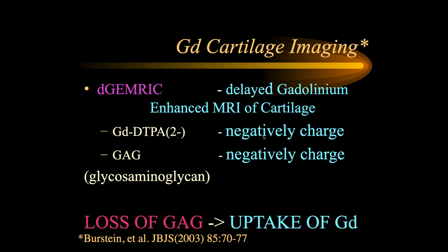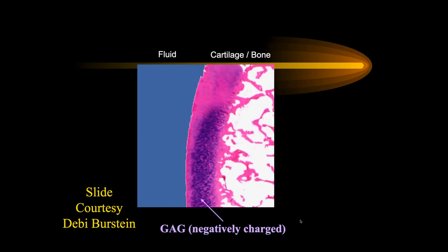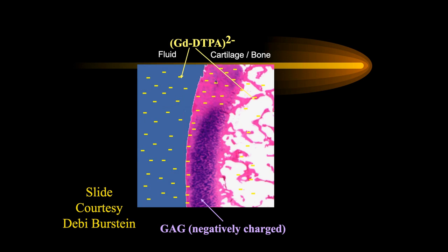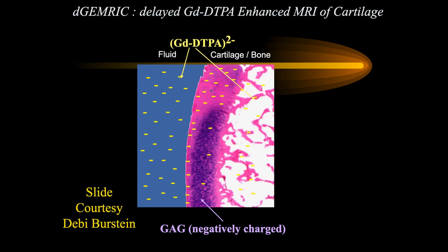If you have loss of glucosaminoglycan, you get uptake of gadolinium. Histologically, glucosaminoglycans stain purple with androxane-eosin stain; loss of glucosaminoglycan causes loss of that staining. So where you'd have loss of glucosaminoglycans, you'd have more gadolinium, and in areas with abundant glucosaminoglycan you'd have less — giving enhancement of the abnormal areas of articular cartilage.